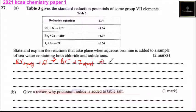So this means that bromine will oxidize, implying that bromine will oxidize iodide ions.